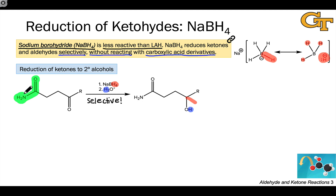The amide is more difficult to reduce, and the reason for this has to do with the fact that the attached heteroatom, which is part of a strong electron-donating group — the amino group — attenuates or lessens the electrophilicity of the carbonyl carbon.